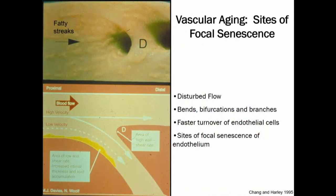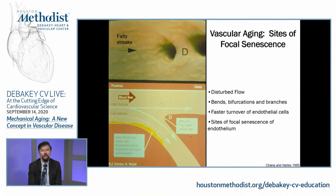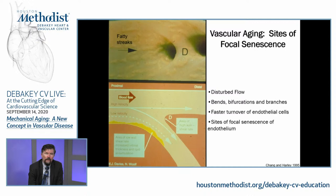The disease of atherosclerosis is one manifestation of vascular aging, and it tends to occur at bends, bifurcations, and branches of blood vessels where the flow is disturbed, recirculating, or vortical. At those sites, the endothelium — the lining of the blood vessel — is aging faster. We actually have sites of focal senescence within our vasculature where cells are aging more quickly.